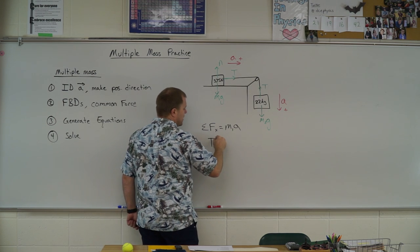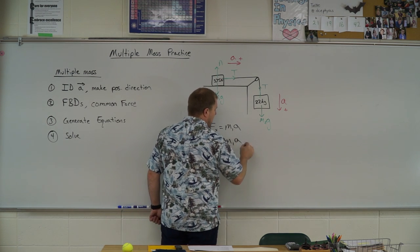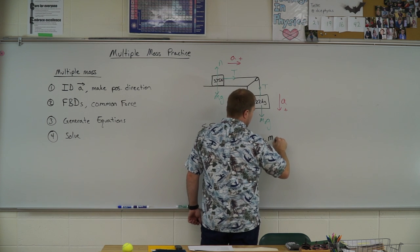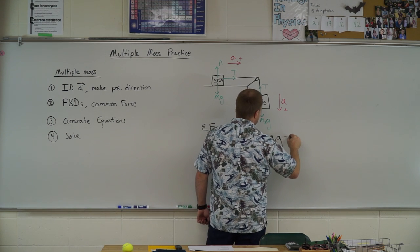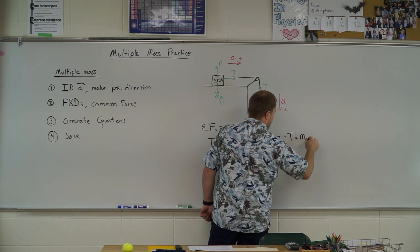Alright, so here I just have tension equals m1a. Over here I end up with down as my positive direction, so I have m2g minus tension equals m2a.